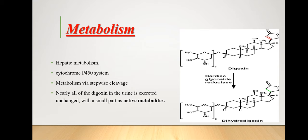Metabolism is the chemical alteration of a drug within the body. The end result of metabolism is usually inactivation, but occasionally a pharmacologically active compound may be formed. There are four ways in which the activity of a drug can be altered by metabolism.